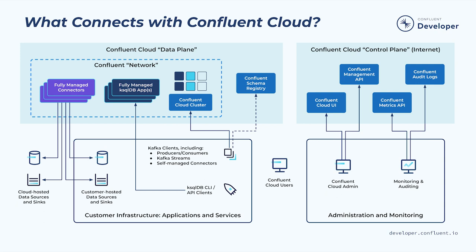Let's talk about Confluent Cloud. There are two main ways to interact with Confluent Cloud. One is our data plane, and the second is our control plane. The data plane is where your data lives in Confluent Cloud. The control plane is where a lot of management, maintenance, and operations take place.